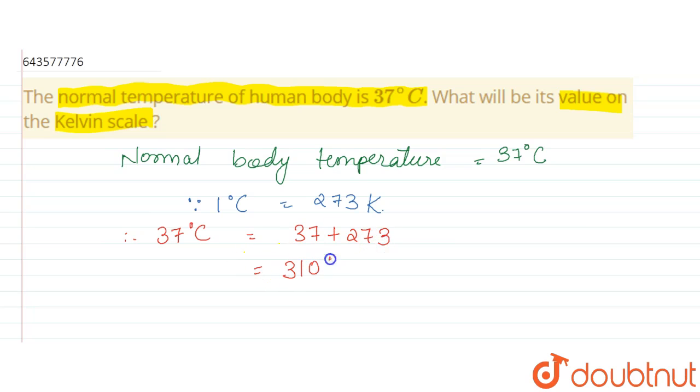So that would be 310 Kelvins. 37 plus 273 is nothing but 310 Kelvin. So 37 degree Celsius equals to 310 Kelvin, which implies that the normal body temperature in Kelvin is 310 Kelvin.